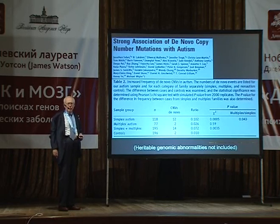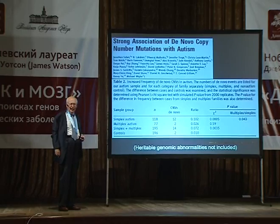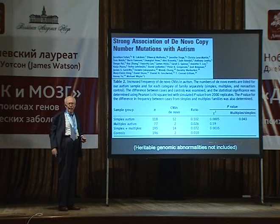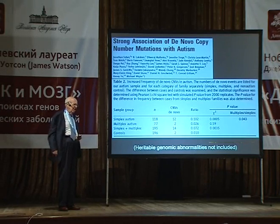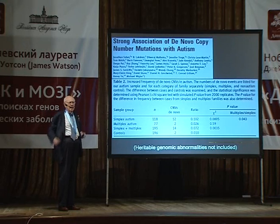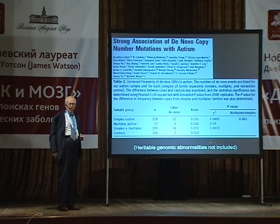So autism was caused by losing DNA — having one copy instead of two. But it could often be a region that would contain 20 genes. Before Wiggler, autism was thought of as possibly only happening when several different genes made your child autistic.